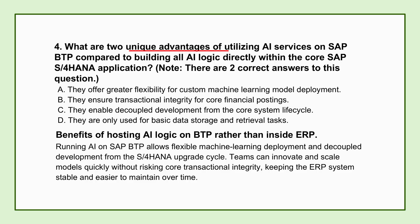Keeping innovation on BTP rather than coding custom AI logic directly into core S/4HANA really comes down to agility and stability. BTP gives far greater flexibility for deploying custom machine learning models — your data science teams can iterate much faster, testing and updating models maybe daily or weekly, while the core ERP handling payroll and closing the books might only get a major update once a year. That decoupling allows AI innovations to evolve rapidly without being constrained by the slower, more cautious ERP upgrade cycle.